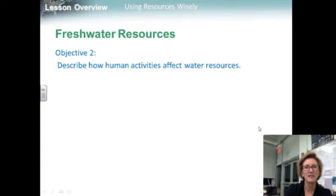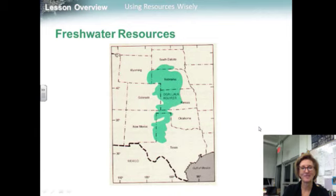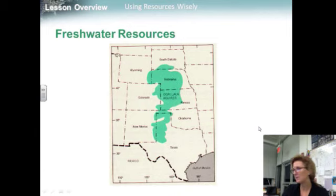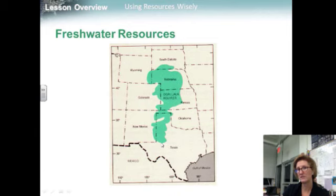Objective two: describe how human activities affect water resources. Humans depend on freshwater and freshwater ecosystems for goods and services, including drinking water, industry, transportation, energy, and waste disposal. Some farmland relies heavily on irrigation, in which freshwater is brought in from other resources. Some sources of freshwater are not renewable. The Ogallala Aquifer, for example, spans eight states from South Dakota to Texas. It took more than a million years to collect and is not replenished by rainfall today. So much water is being pumped out that it's expected to run dry in 20 to 40 years. Only 3% of Earth's water is freshwater, and most of that is locked up in ice at the poles.